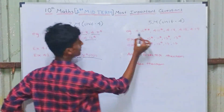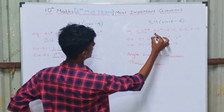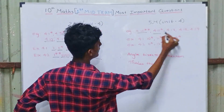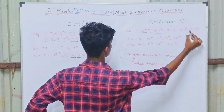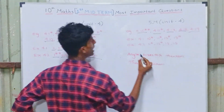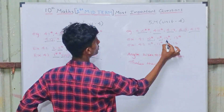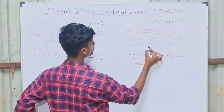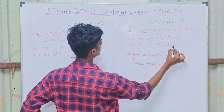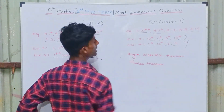For five marks: Example 4.10 (very important), 4.11, 4.17, 4.18, 4.19. Exercise 4.1: 10th, 11th, 12th, 13th sums. Exercise 4.2: 12th, 13th, 15th sums. This covers geometry. The most important theorems are the angle bisector theorem and Thales' theorem.